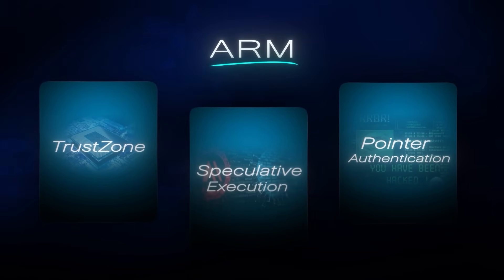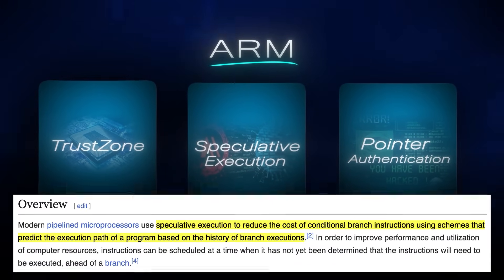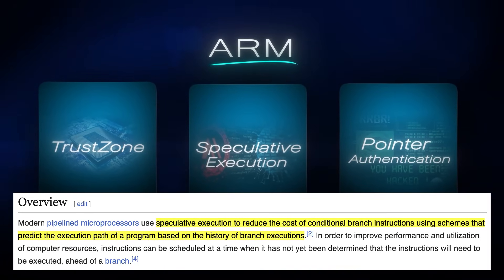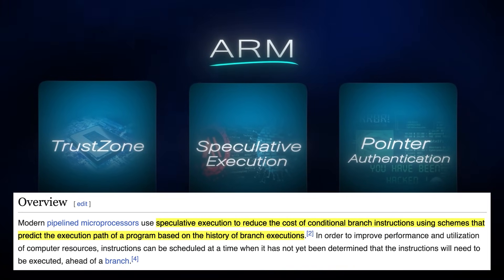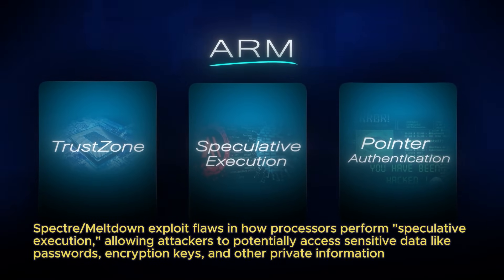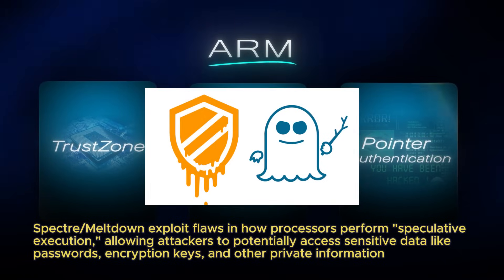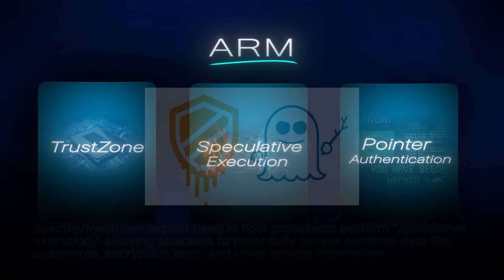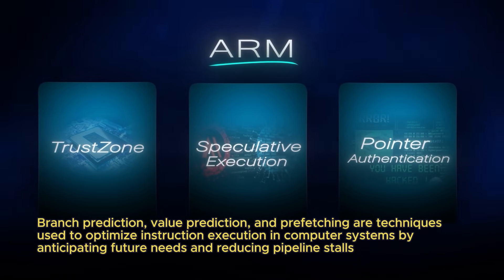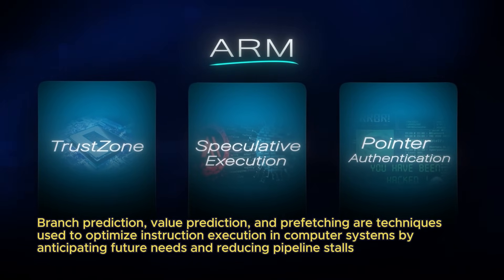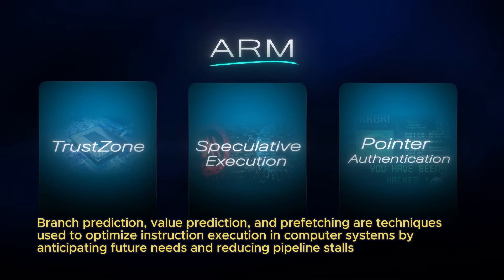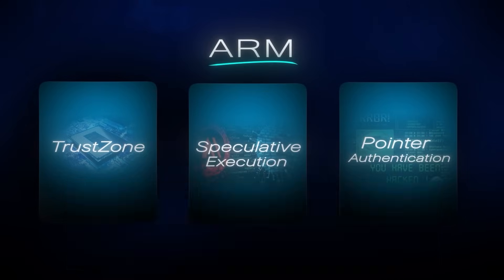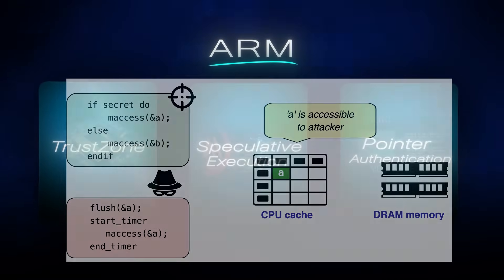I'll also explain speculative execution protection, but first let me explain speculative execution. Speculative execution is a performance optimization technique used by modern processors to predict and execute instructions before they are officially needed. While this boosts speed, it can also create security vulnerabilities such as Spectre and Meltdown, where attackers can trick the processor into revealing sensitive information from protected memory. Speculative execution protection refers to hardware and software mitigations designed to counter these vulnerabilities, by restricting certain predictions or flushing sensitive data from the cache after speculative operations.